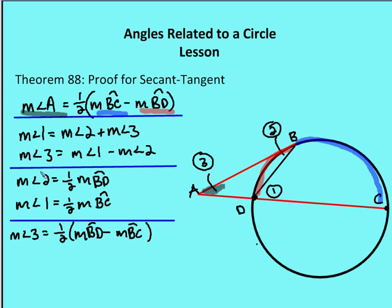Correcting a small typo: the measure of angle three equals the measure of angle one, which is one-half the measure of arc BC, minus the measure of angle two, which is one-half the measure of arc BD. So the measure of angle three equals one-half the measure of arc BC minus one-half the measure of arc BD. That is exactly what we were looking to prove.